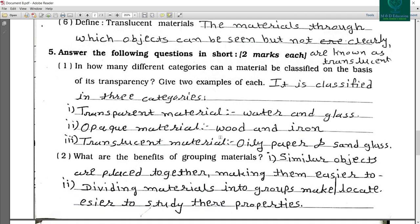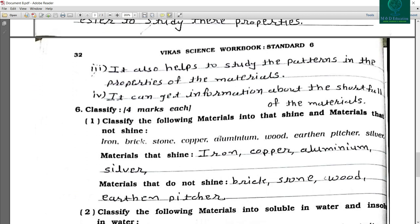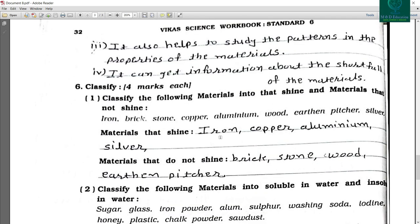Second one is dividing materials into groups makes it easier to study their properties. Third one is it also helps to study the patterns in the properties of the materials. And fourth one is it can get information about the sort and fall of the materials.